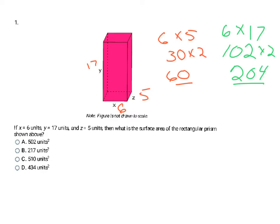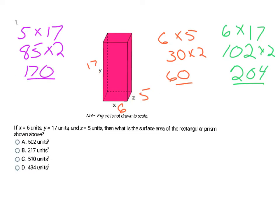That accounts for four sides. The remaining left and right sides each have dimensions 5 by 17: 5 times 17 = 85, and two of those gives 170. Adding all three groups together: 170 plus 60 plus 204 equals 434 units squared, which is choice D.